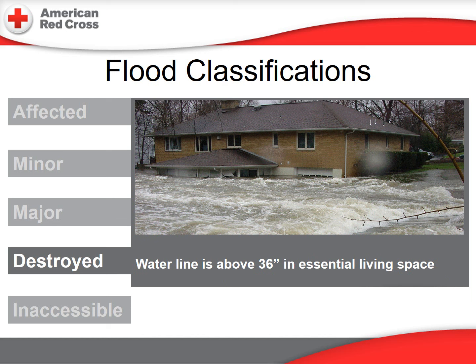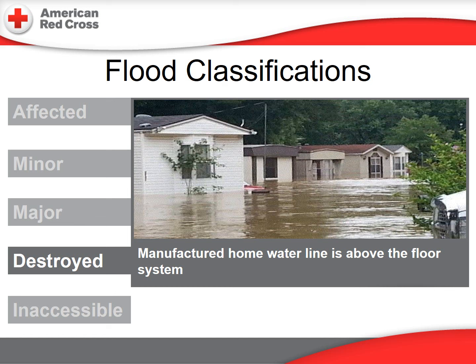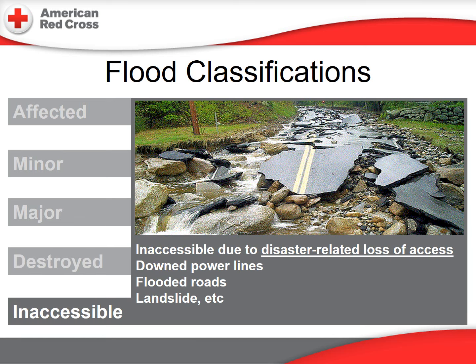For this home, the water level is above 36 inches in an essential living space — it would be classified as destroyed. These manufactured homes have a water level obviously above the floor system. Once the water reaches the floor system, the manufactured home is considered destroyed. An area is inaccessible if it is inaccessible by reason of a disaster-related loss of access.